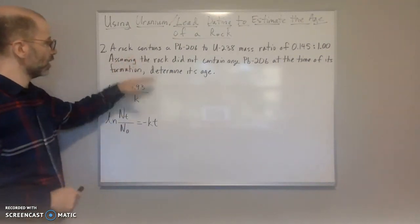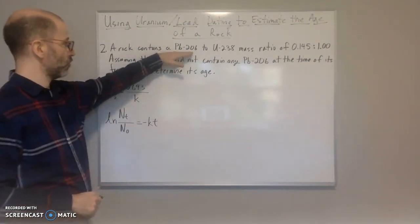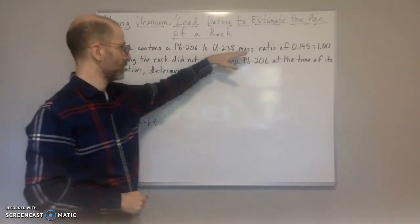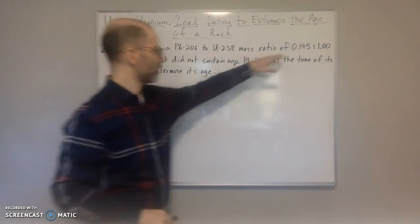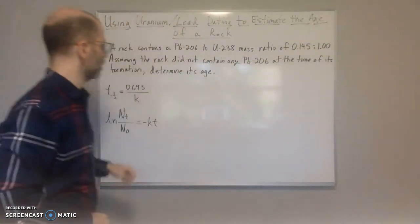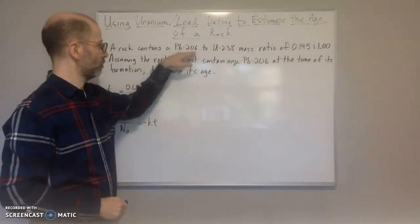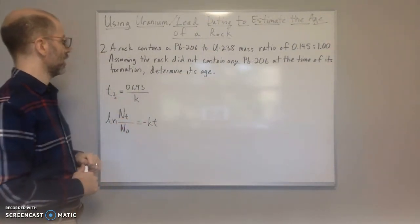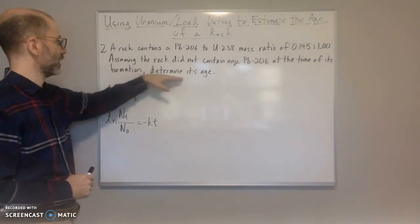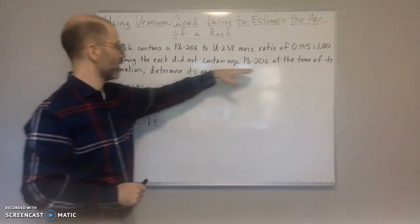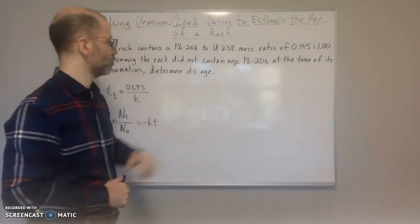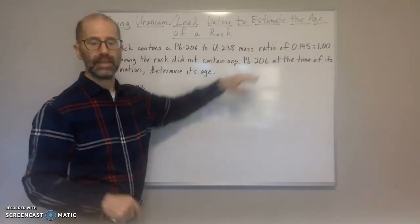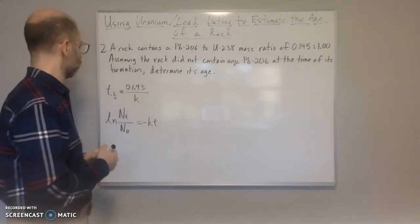So let's work on this problem here. Same kind of problem. We have a rock contains a ratio of Pb-206 to uranium-238 mass ratio. So we got the mass ratio here between these two. And we need to find the age of this rock.